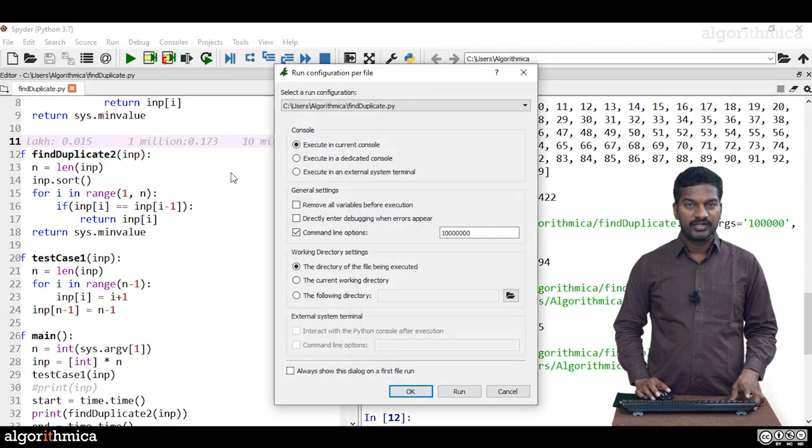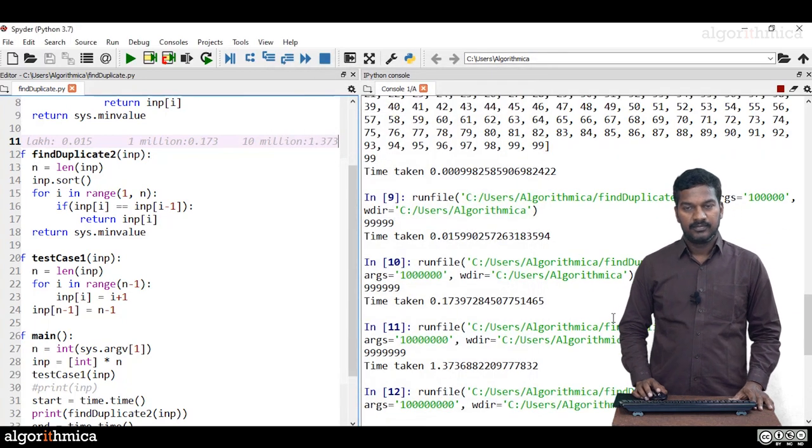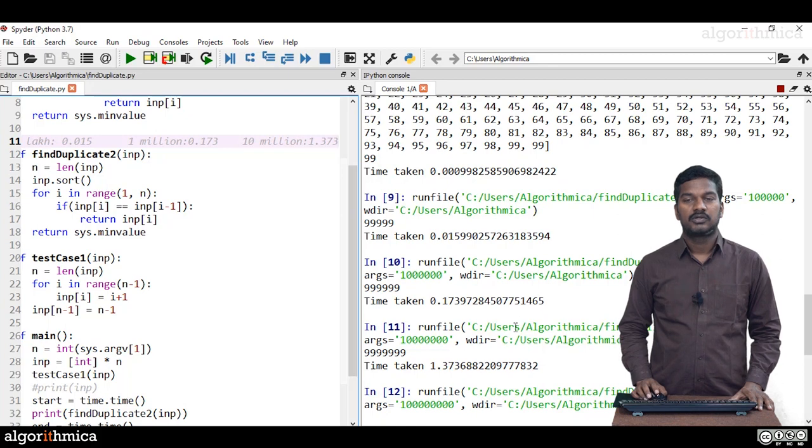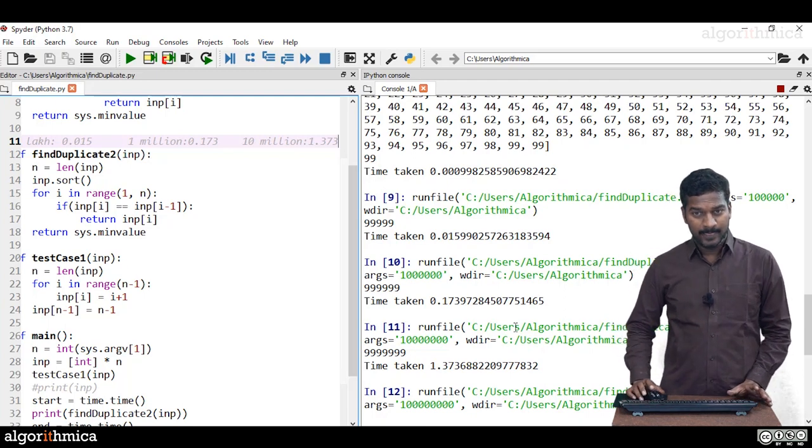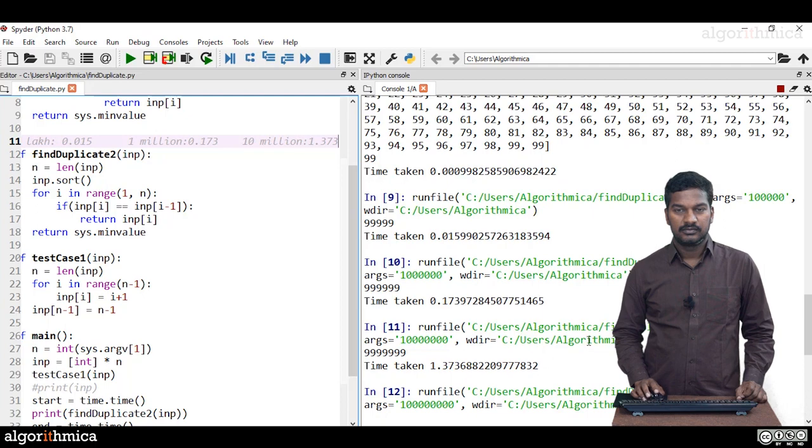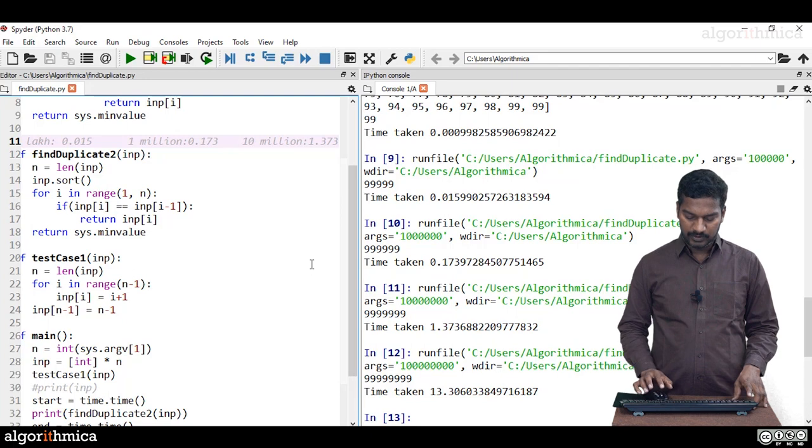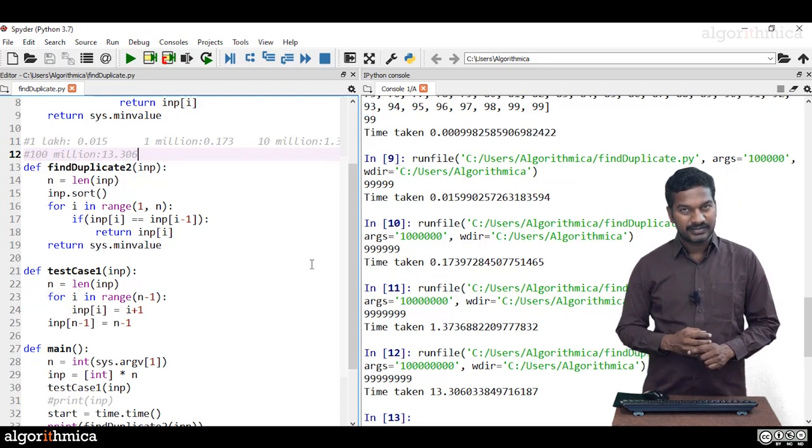Let's try 100 million. Go to run configuration for file - 100 million, run. The algorithm is still running. 100 million log 100 million - that's how we can estimate the overall timing it might take. It's taking a considerable amount of time for 100 million. Now we got it - 13 seconds approximately. For 100 million, it is taking 13.306 seconds. This is not acceptable.